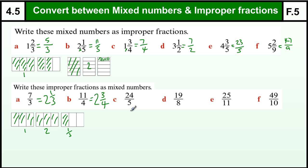24 divided by 5: 5 times 4 is 20, so that is 5 whole numbers and 4 left over, which are fifths.